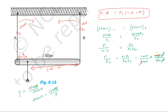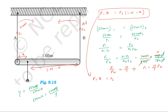After simplification: 2 and 20 cancel, giving 10 by 7. So F1 by F2 equals 10 by 7, meaning F1 equals (10/7) × F2. Now applying the principle of moments as the first equation: F1 × x equals F2 × (1.05 minus x). Substituting F1 equals (10/7) × F2: (10/7) × F2 × x equals F2 × (1.05 minus x). The F2 cancels.